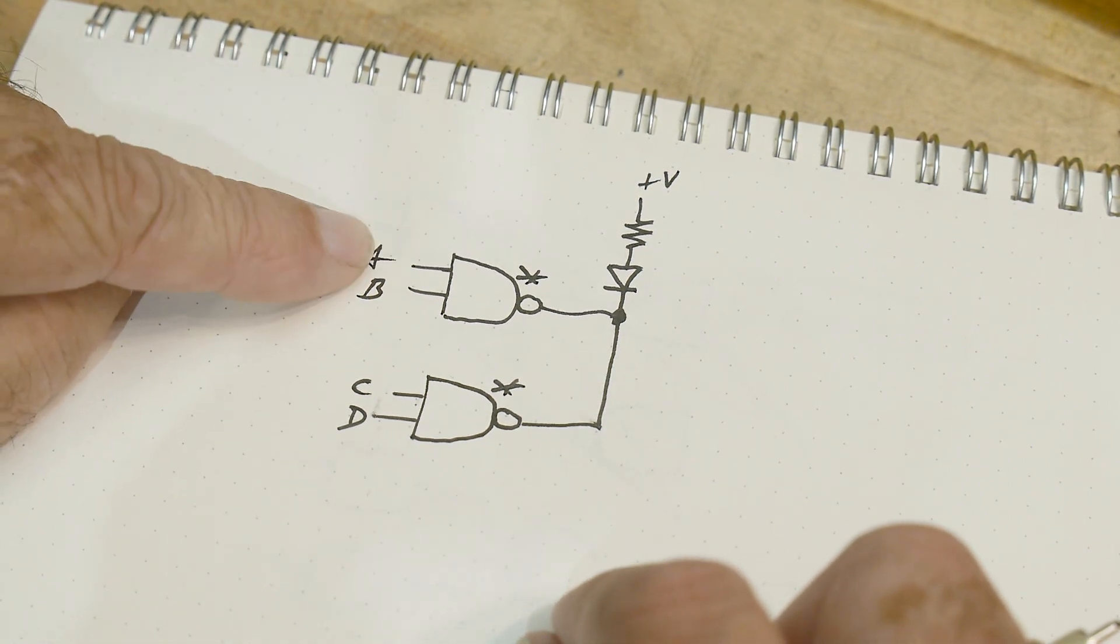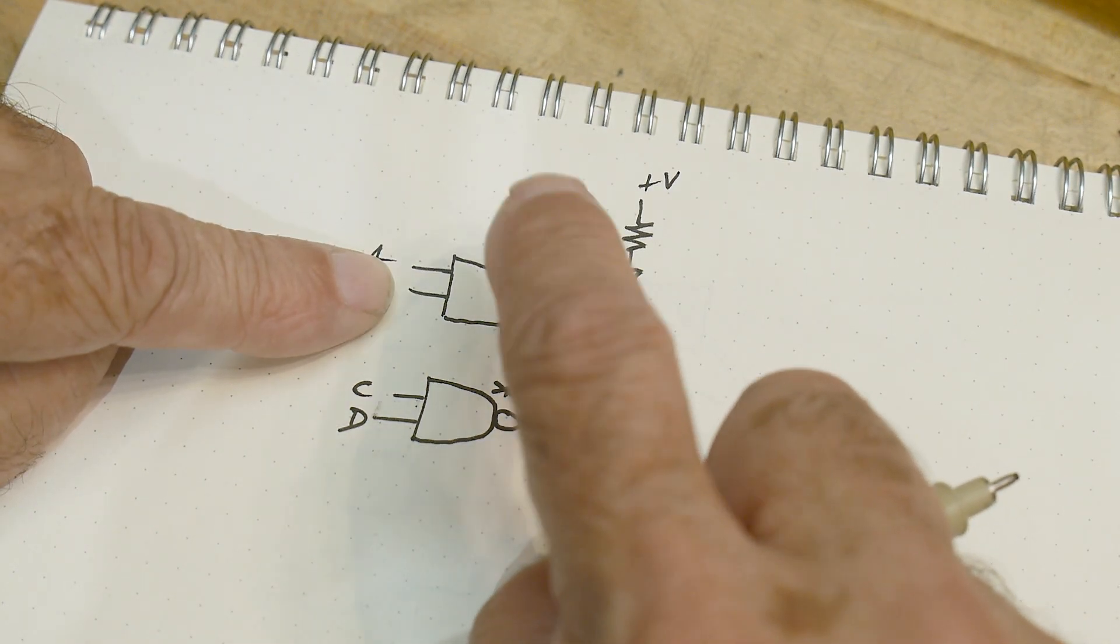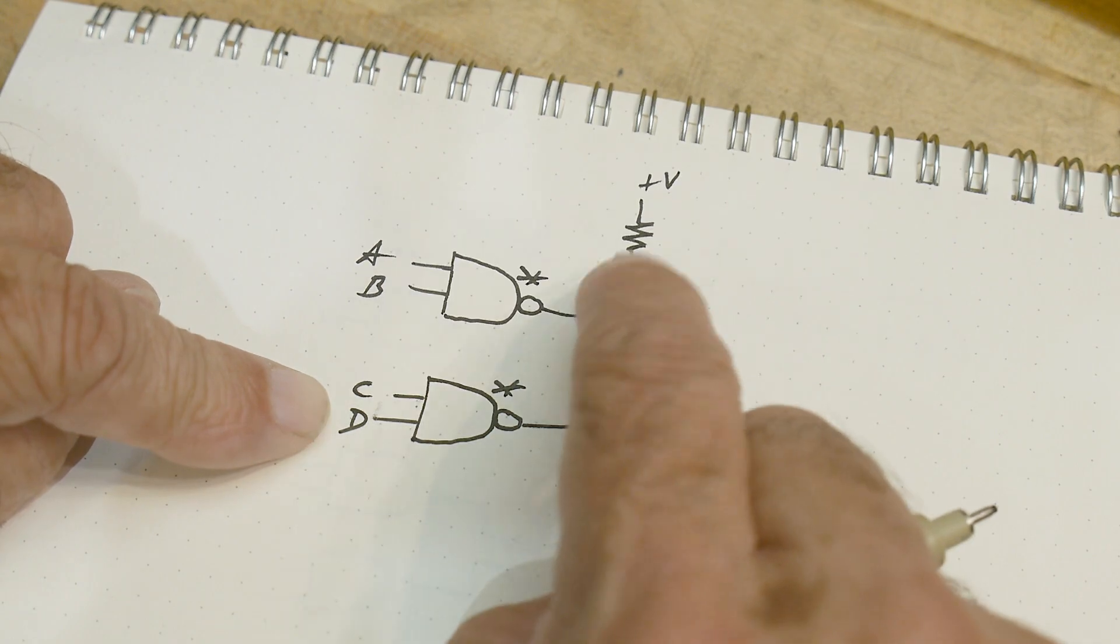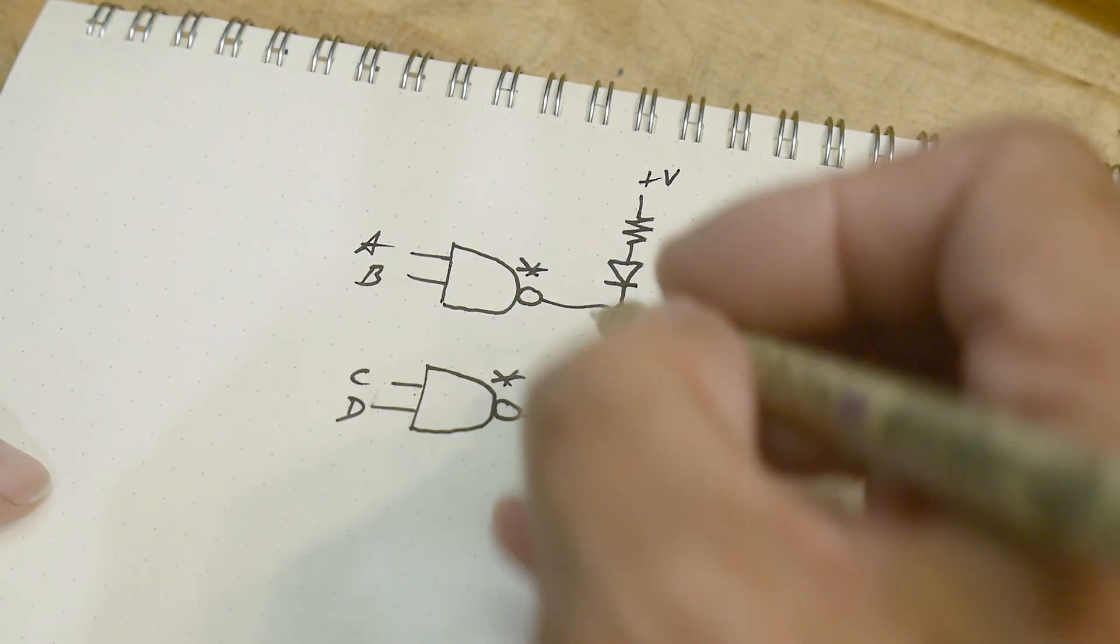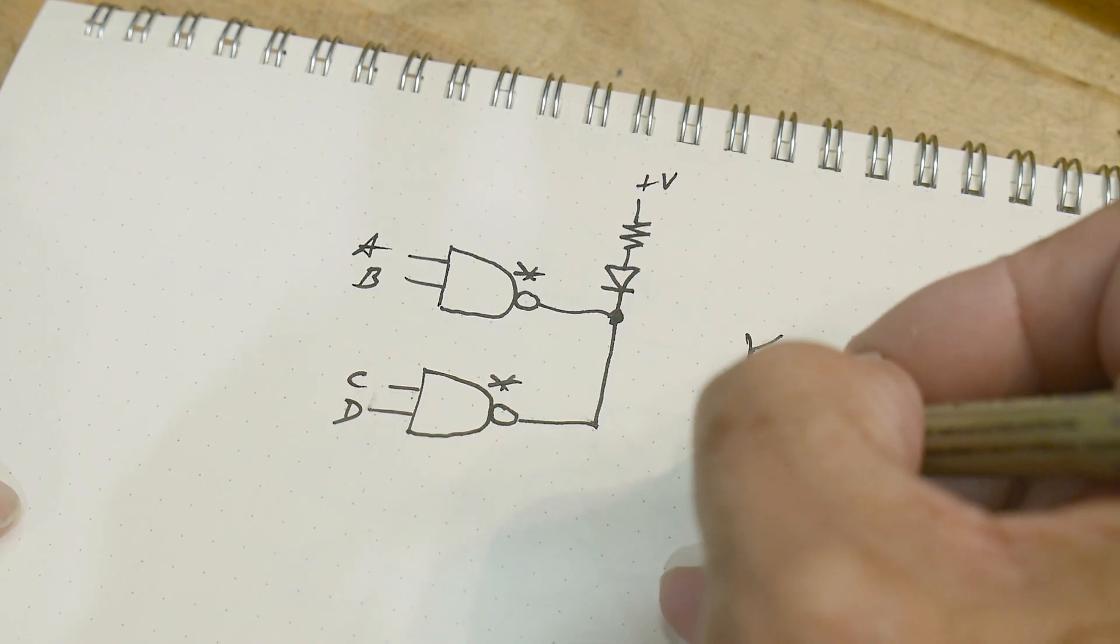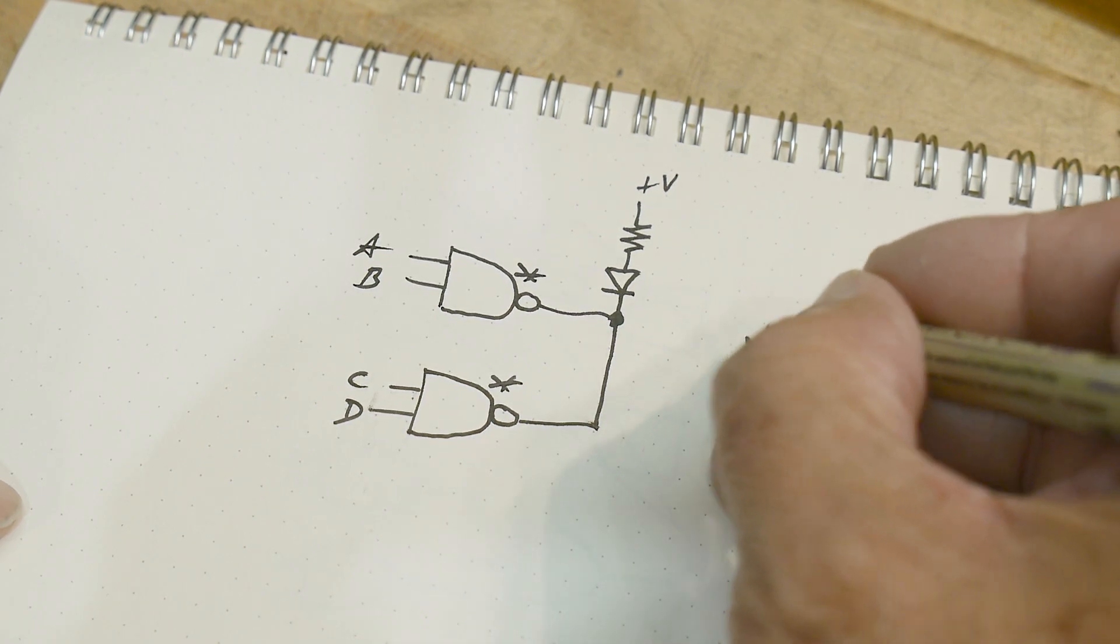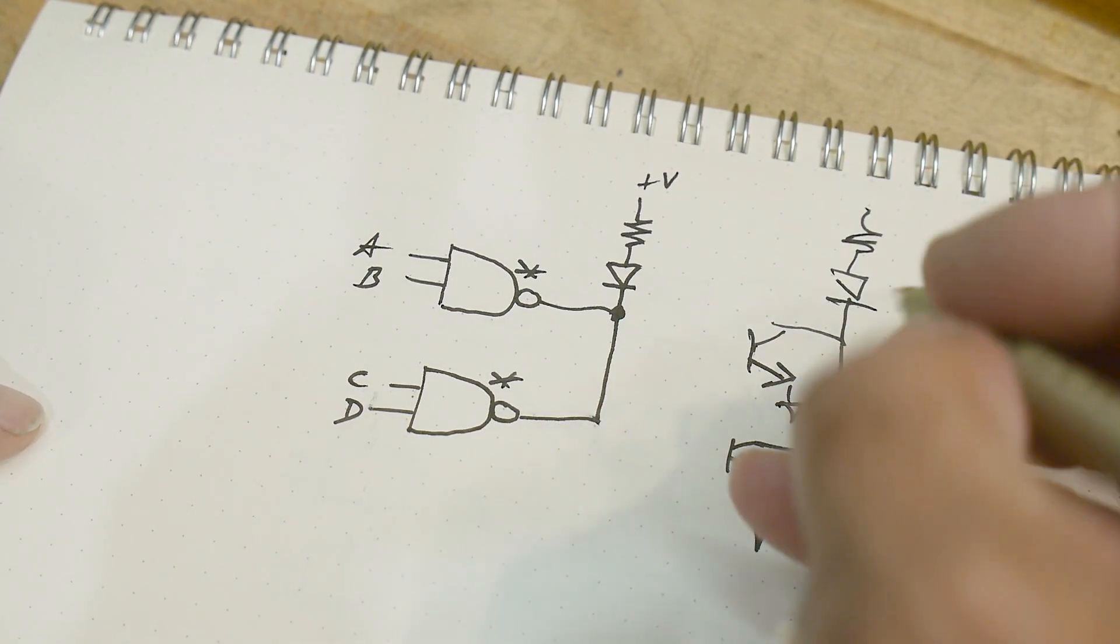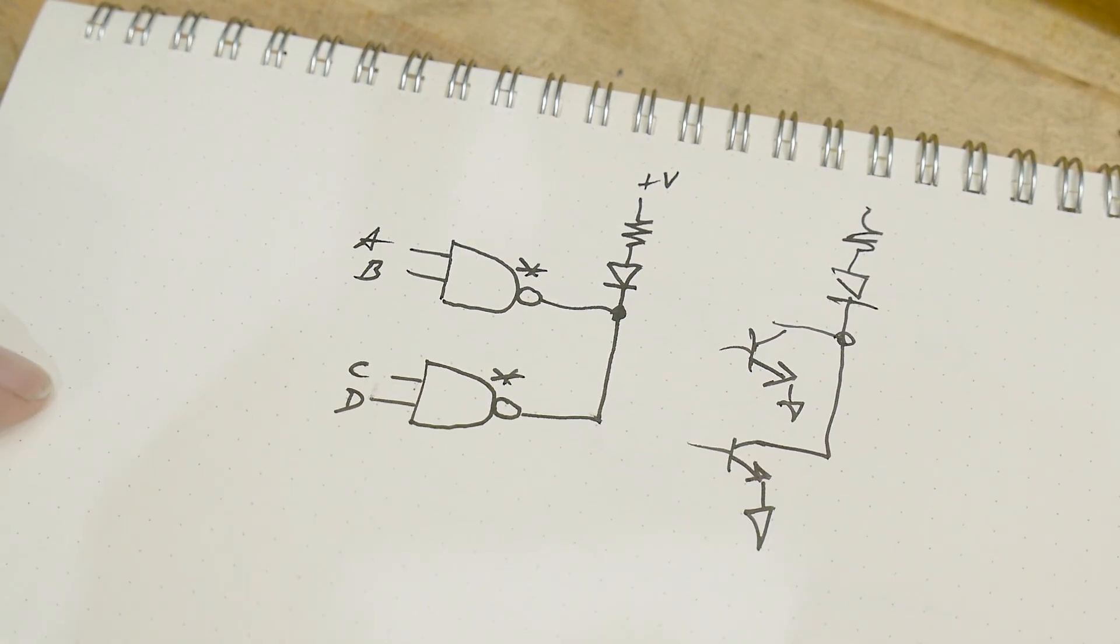So we're going to have A and B, and that's going to make the output low. We're going to have C and D. That will make the output low. And we want to turn the LED on if this is true or this is true. And we can just wire those together because the outputs of these devices are open collector. Each one of these is open collector, and these are tied to ground. And then the collectors are tied together, and then they go to the LED. So the OR function is performed with a piece of wire, because it's open collector.